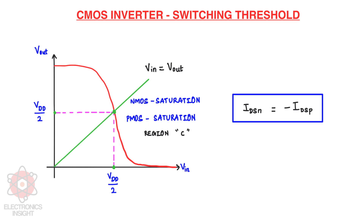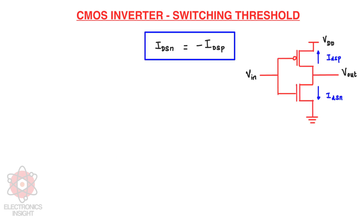When considering both transistors in saturation, we set IDSN equal to IDSP, where IDSN is the drain-to-source current of NMOS in saturation and IDSP is the drain-to-source current of PMOS in saturation. Before equating these currents, we first establish the values of VGSN, VDSN, VGSP, and VDSP.